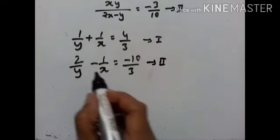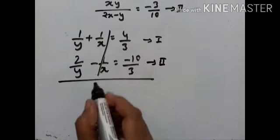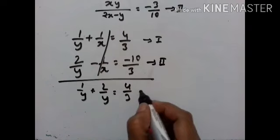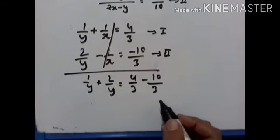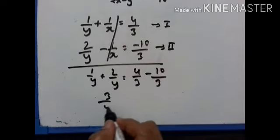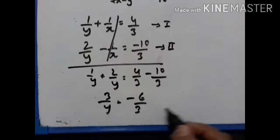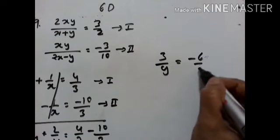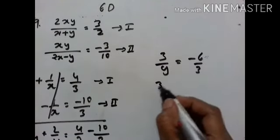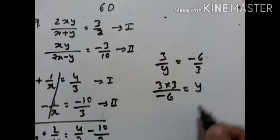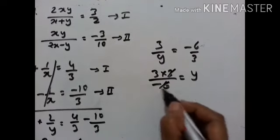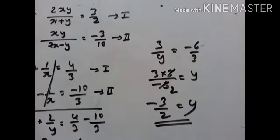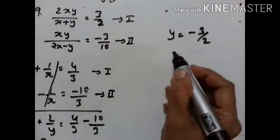Adding the first and second equations: the 1 upon x terms cancel. 1 upon y plus 2 upon y equals 4 upon 3 minus 10 upon 3, giving 3 upon y equals minus 6 upon 3. Therefore y equals 3 times 3 upon minus 6, which simplifies to minus 3 upon 2. So y equals minus 3 upon 2.